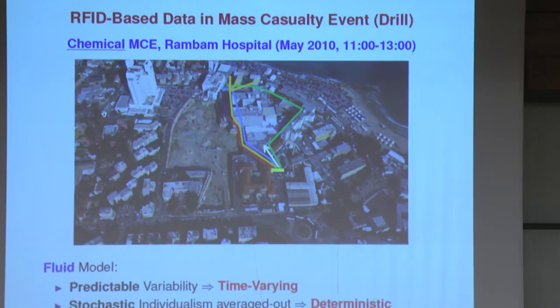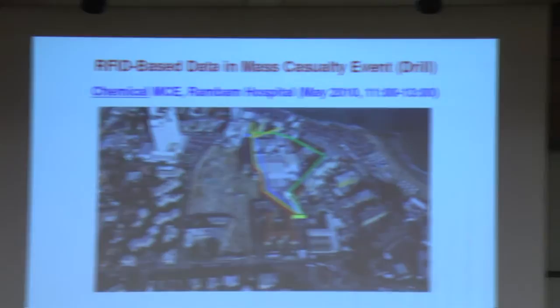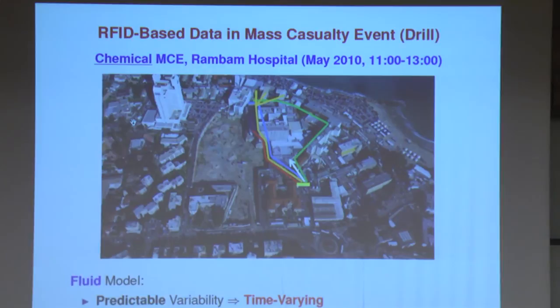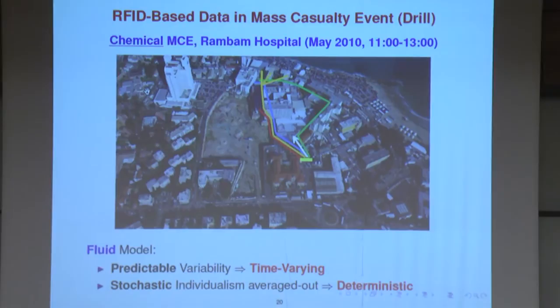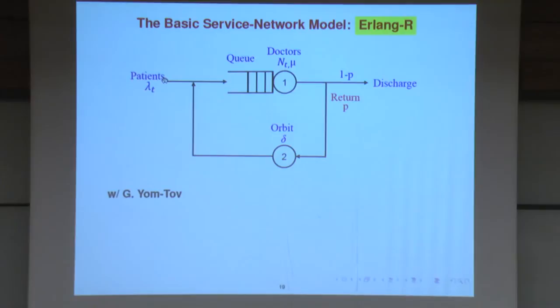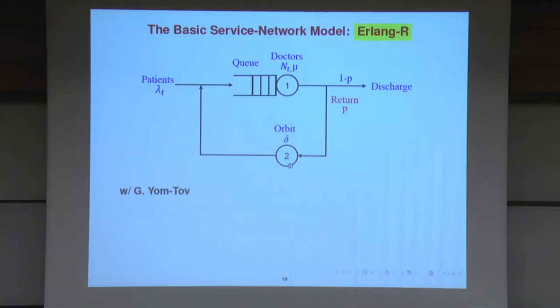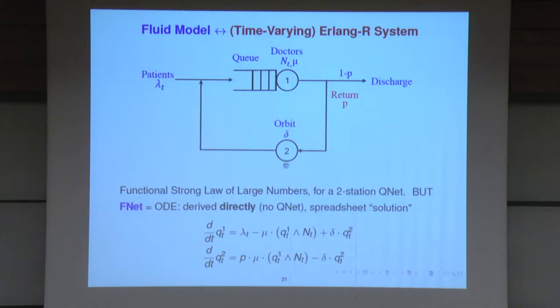There are about 15 to 20 people running and feeding the computer data. What we try to do is prove that by having these tags and automating data collection we can monitor or control the event much better. This is the model of the emergency department — as simple as it gets. Here are the doctors we want to focus on, and here is the rest of the world aggregated into a single node.